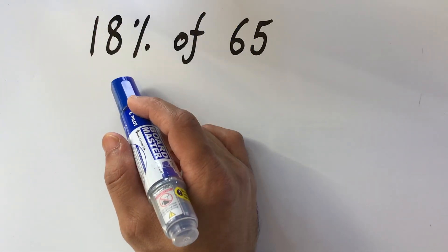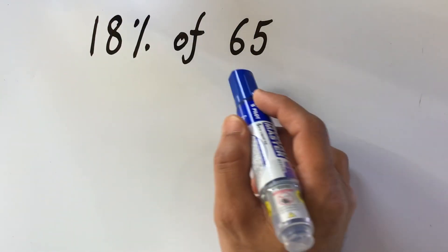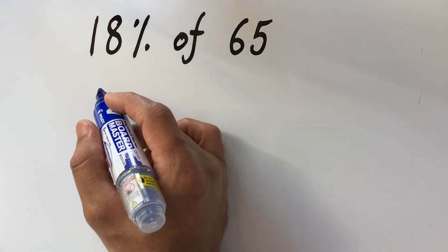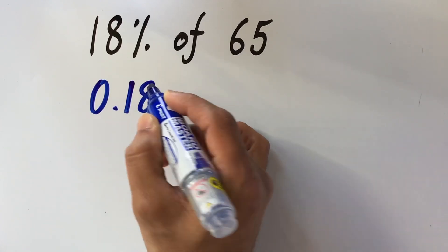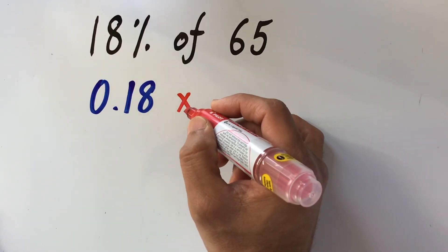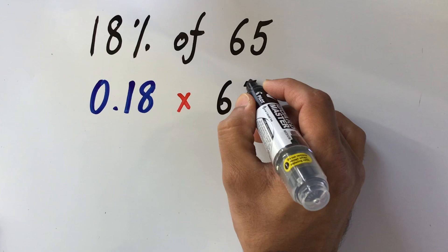In the second example, we need to find 18% of 65. Here, we first convert 18% into a decimal, which gives us 0.18. Of means multiplication, and we write 65 as it is.